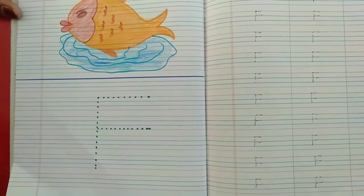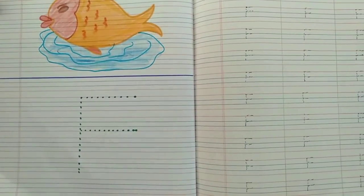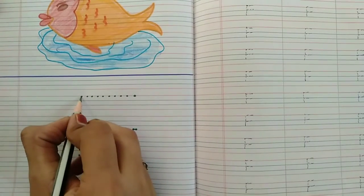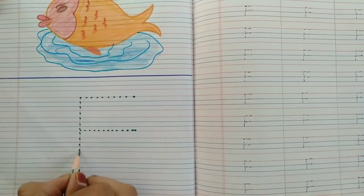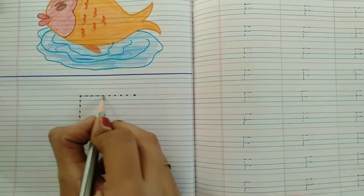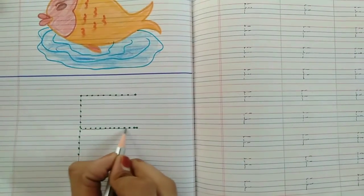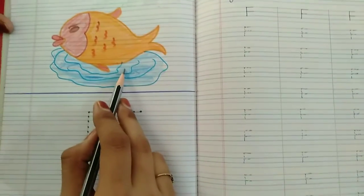Students how to write F? F kaisa likhenge haan? Pehle hum kya karenge? Standing line, sleeping line, sleeping line. F for fish.